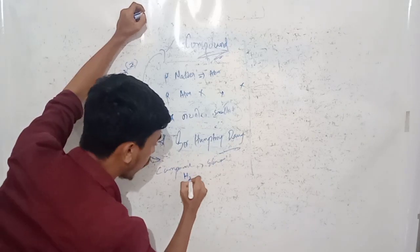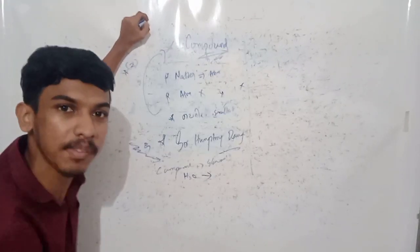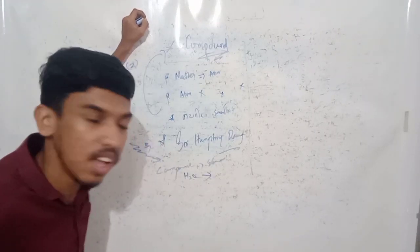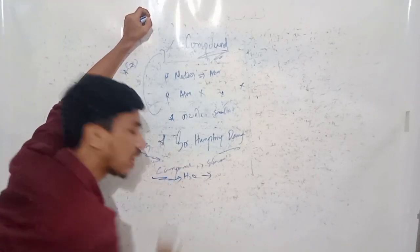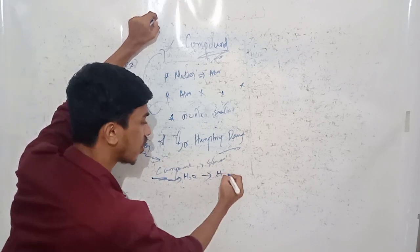For example, H2O is a compound. It's a compound. But if we use the electricity, we use it to divide the elements.